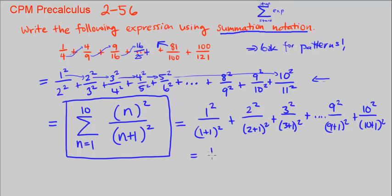If we simplify it, that's 1 over 1 plus 1 squared is 4. 2 squared is 4 over 2 plus 1, 3 squared is 9. 3 squared is 9 over 4 squared is 16 plus dot dot dot.